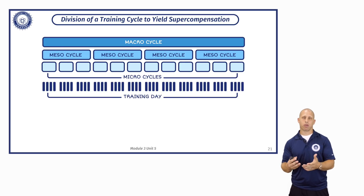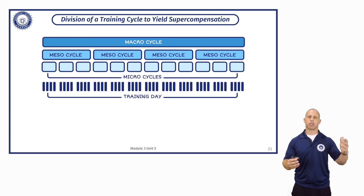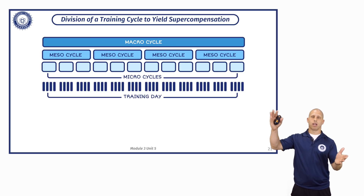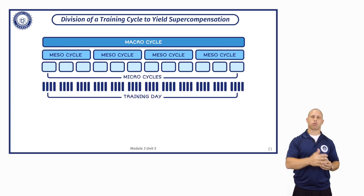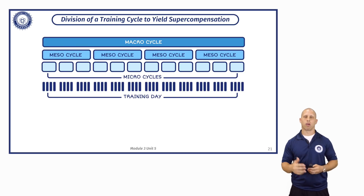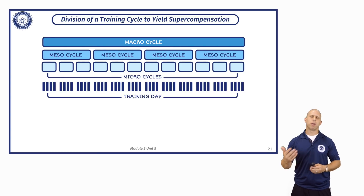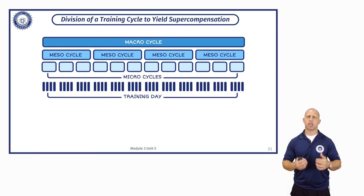Another advantage of an undulating type of model is that it allows us to peak more frequently. If we have to peak two or three times during the year, instead of gradual decreases in intensity or volume, we get more of a wave pattern where we can spike and decrease volume more readily, and the same with intensity.